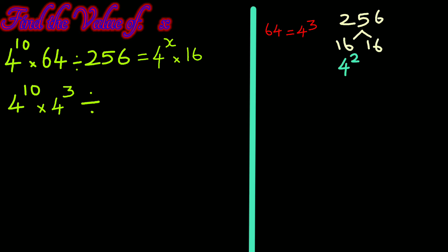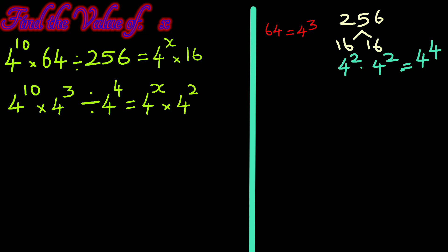16 is 4 squared, so 256 is 4 squared times 4 squared, giving 4 to the power 4. So we have 4 to the power 10 times 4 cubed divided by 4 to the power 4, equal to 4 to the power x times 16, which is 4 squared.